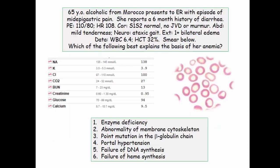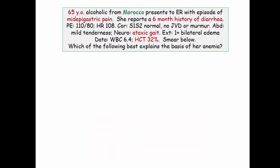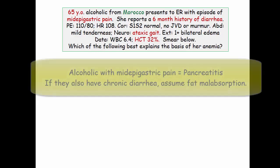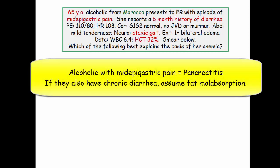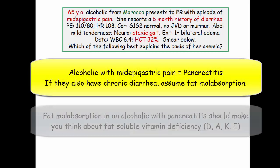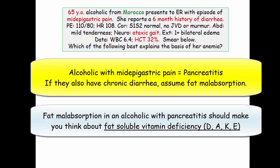Let's analyze the stem. The patient is 65 years old, so is at risk for cancer, and if this is a woman, she would be postmenopausal. Morocco just spices it up a bit. Mid-epigastric pain and alcoholism equals pancreatitis. A six-month history of diarrhea in an alcoholic with pancreatitis suggests malabsorption, with emphasis on fat-soluble vitamins.